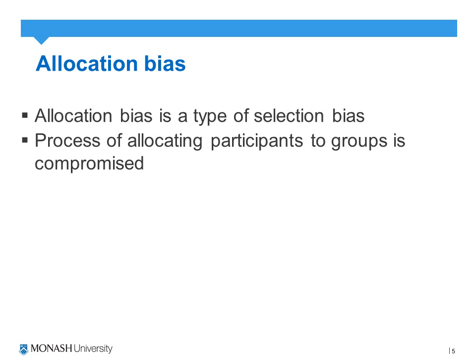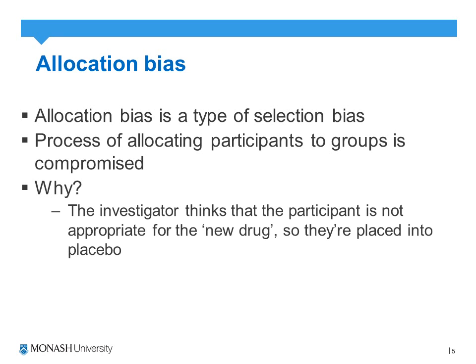Allocation bias is another form of selection bias and relates to how we actually go about allocating participants to groups. If that process is compromised, it's obviously a very big issue. If we're randomizing participants to one group or another but can manipulate it in some way, we increase the chances of allocation bias.